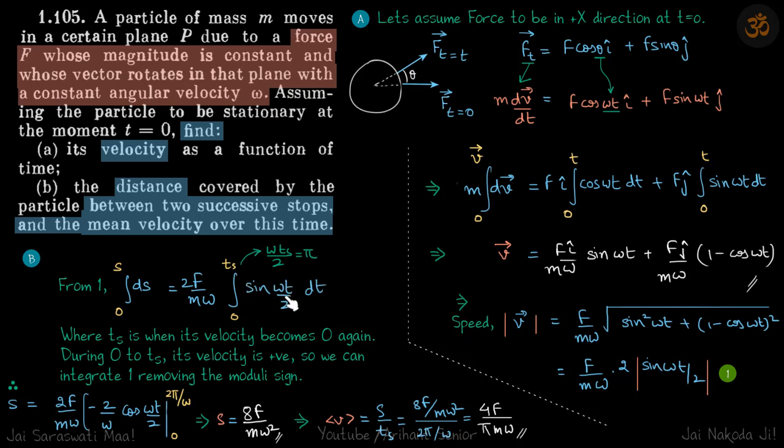At t equals zero the distance is zero. When does it stop? That happens when omega t by 2 is equal to pi. So let's say it stops again at time Ts, so omega Ts by 2 equals pi. When we write distance by integrating this dot dt we will put the limits from 0 to Ts and Ts will be given by omega Ts by 2 equals pi. Let's write also what we just explained where Ts is when its velocity becomes zero again.